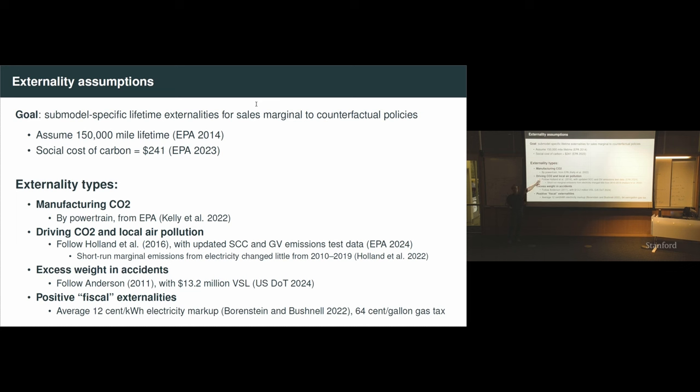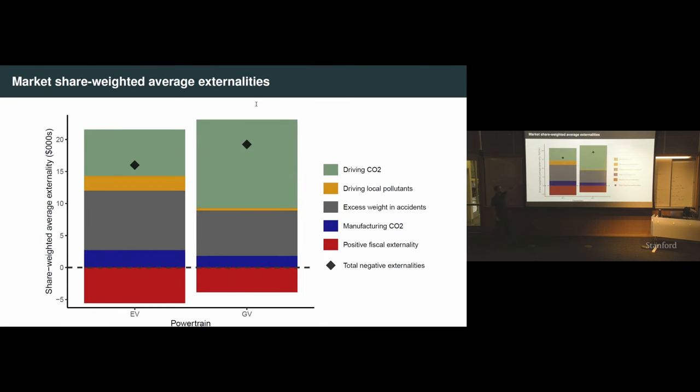The decision we made for at least this version of the paper is that we are using short run marginal emission rates. These are calculated by Holland et al, where basically the idea is, as demand increases in certain regions, how much do emissions increase? It turns out that short run marginal emission rates have not changed over the last decade. So even as the grid has become cleaner on average, the marginal plant is still a gas plant. If we have to use more electricity, it's typically a gas plant that's turning on.